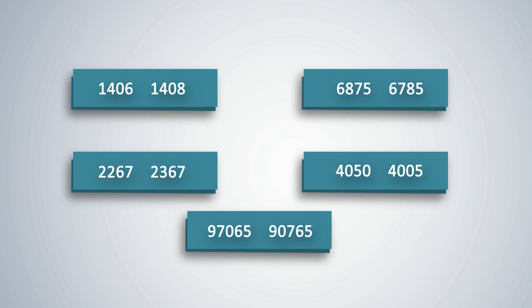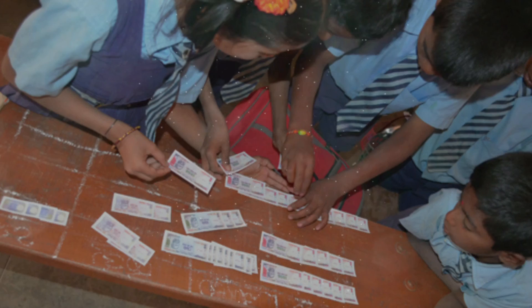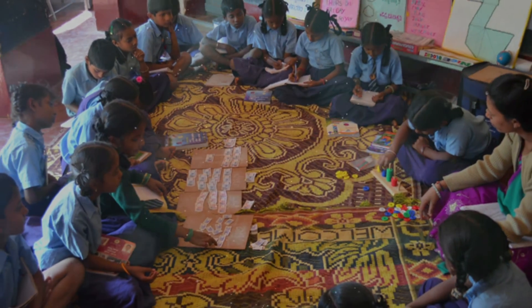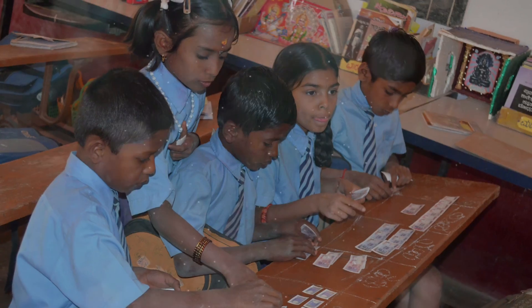For practice, students can start by representing numbers using the teaching aids in the math kit and then move to working in a notebook. Students pick up fast through peer learning when they work in groups, and then they will be confident of answering any problems.